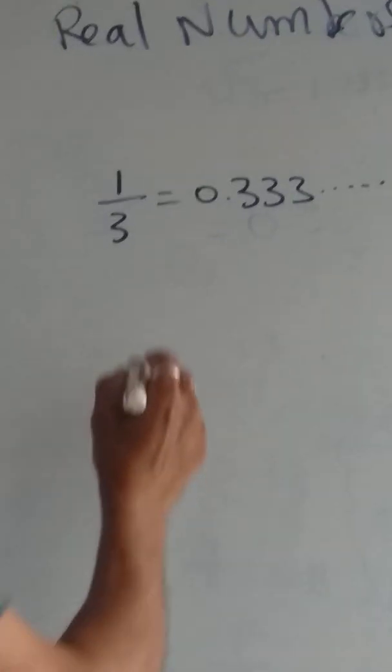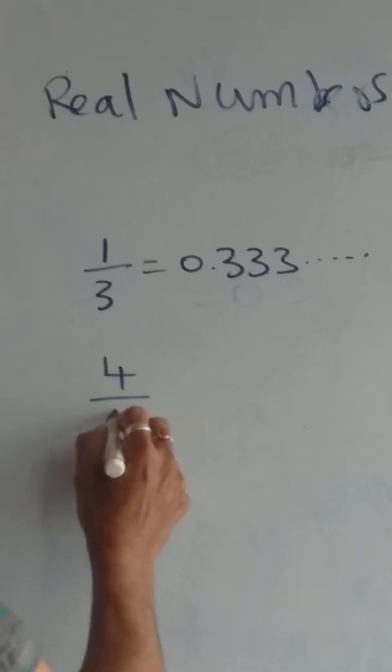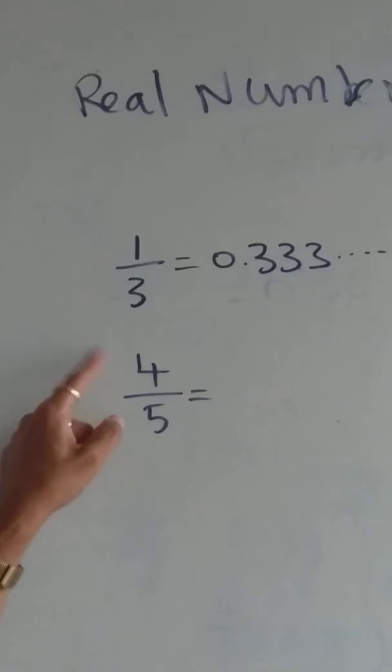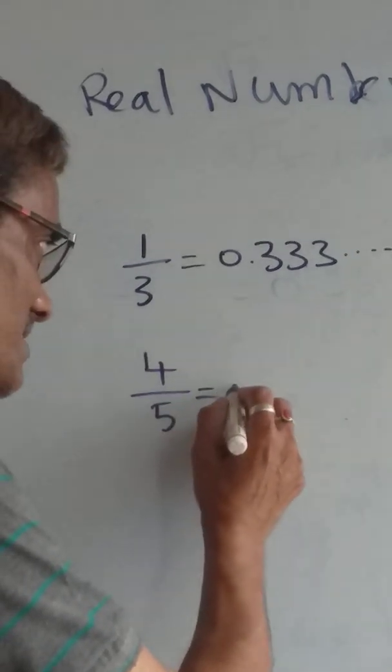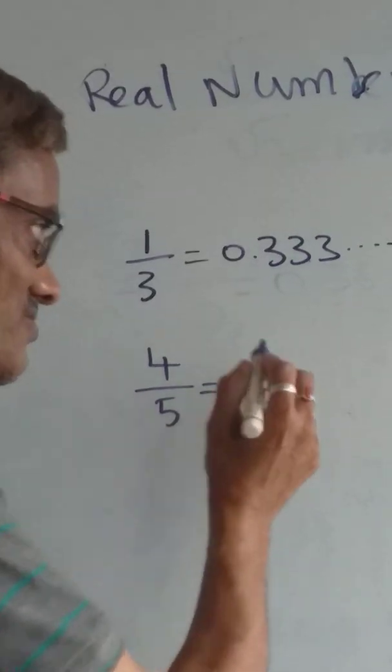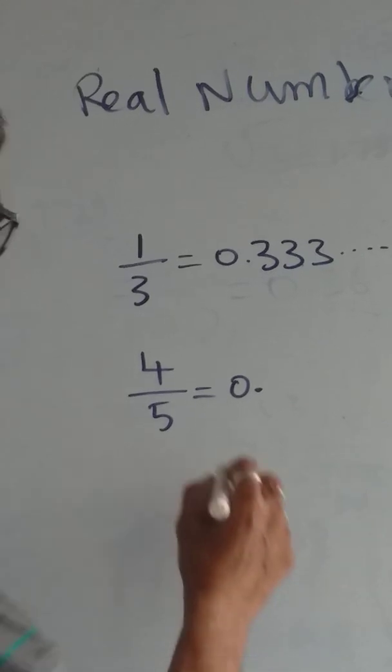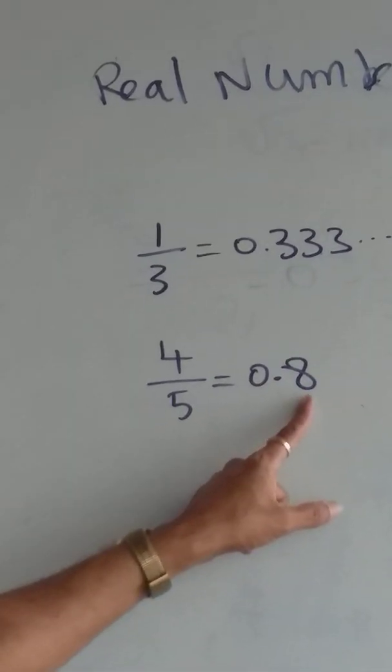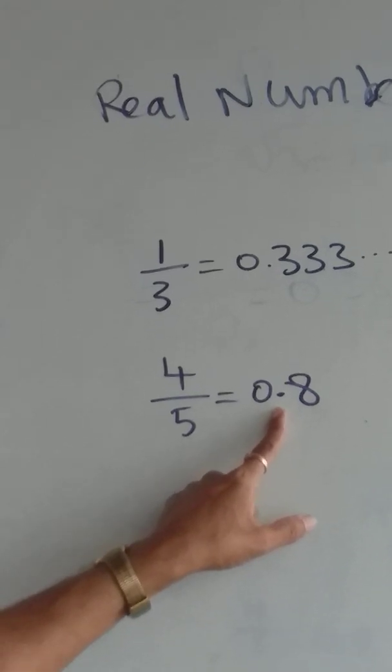Another number I'll take: 4 by 5. After dividing 40 by 5, we get 8. So that decimal number, here we are getting only 0.8.